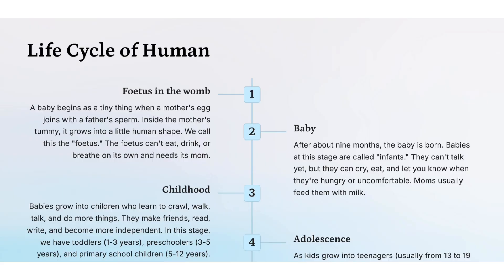Now let's go over the life cycle of a human. A baby begins as a tiny thing — when a mother's egg joins with a father's sperm inside the mother's womb, it grows into a little human shape called a fetus. The fetus can't eat, drink, or breathe on its own and needs its mom. After about nine months, the baby is born. Babies at this stage are called infants; they can't talk yet, but they can cry, eat, and let you know when they're hungry. Moms usually feed them with milk.